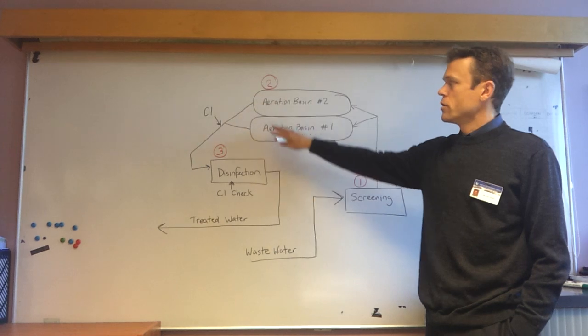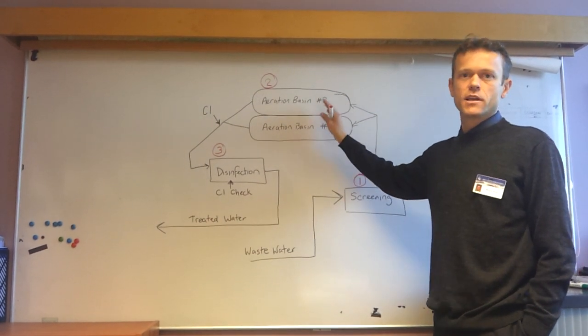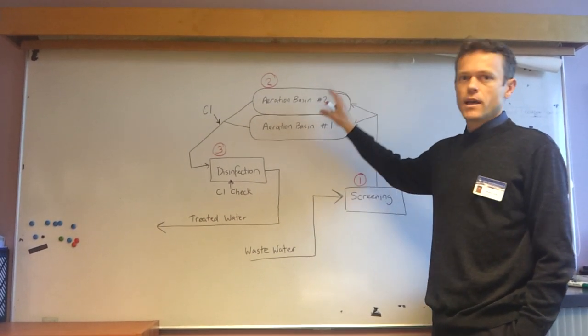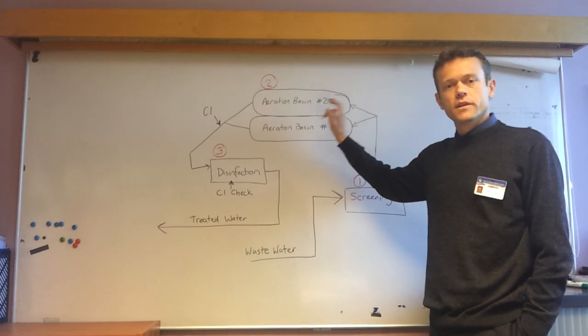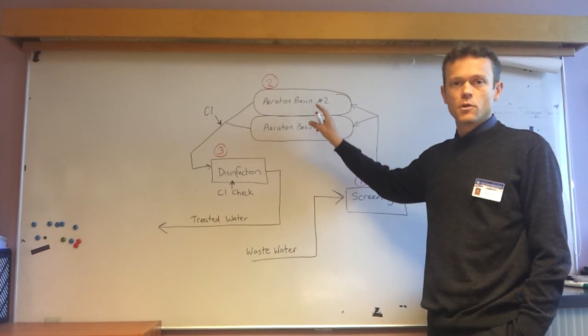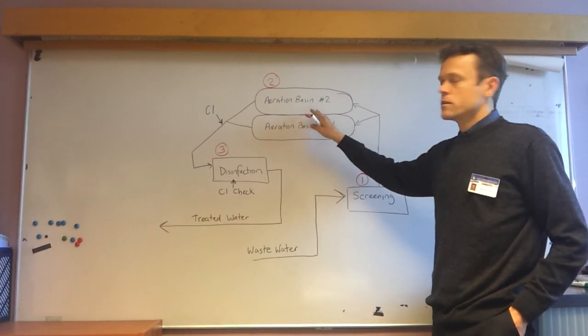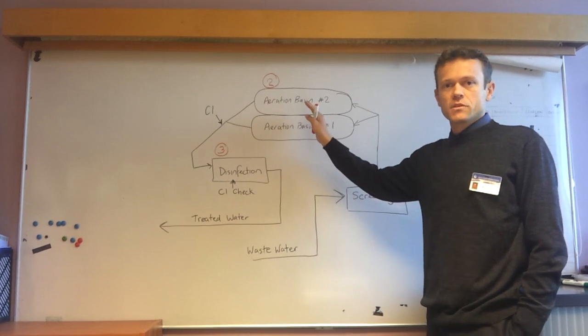Step two, biological treatment. That's where it goes into the aeration basins. Here we add oxygen. We encourage naturally occurring bugs to grow and multiply and they consume organic material in the wastewater.